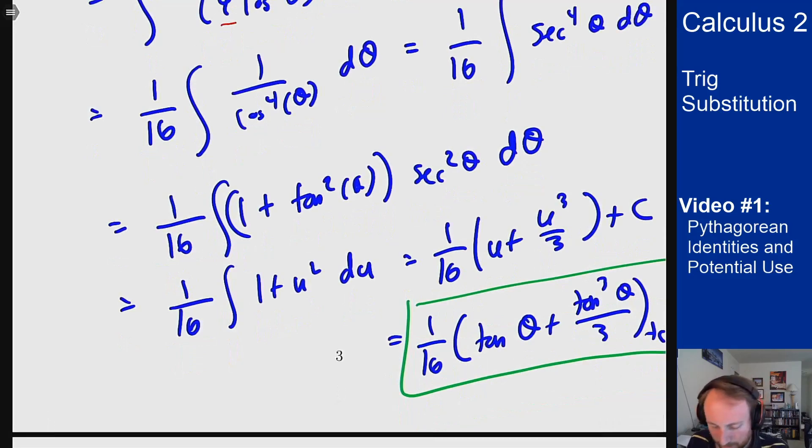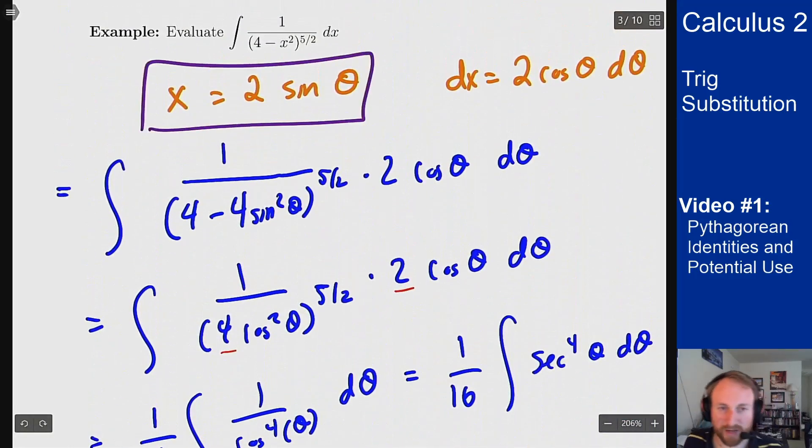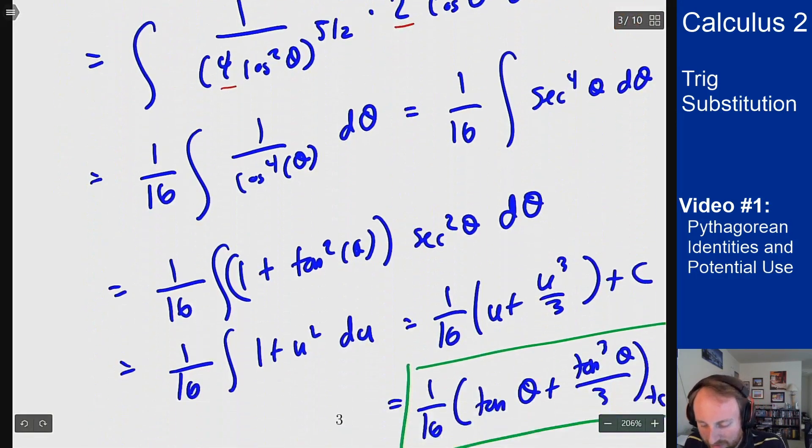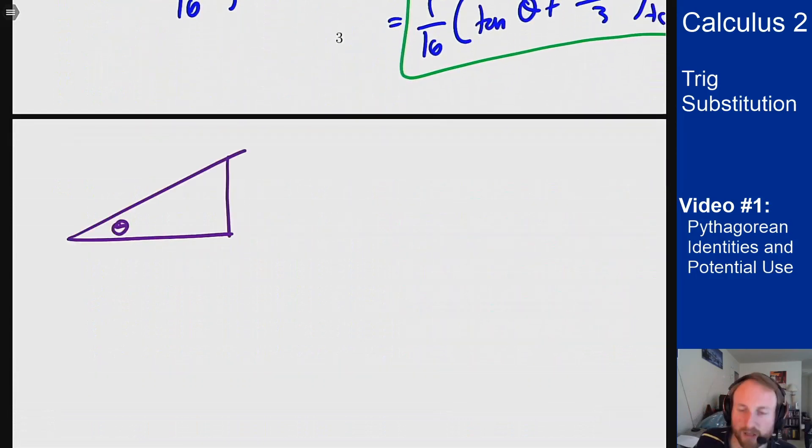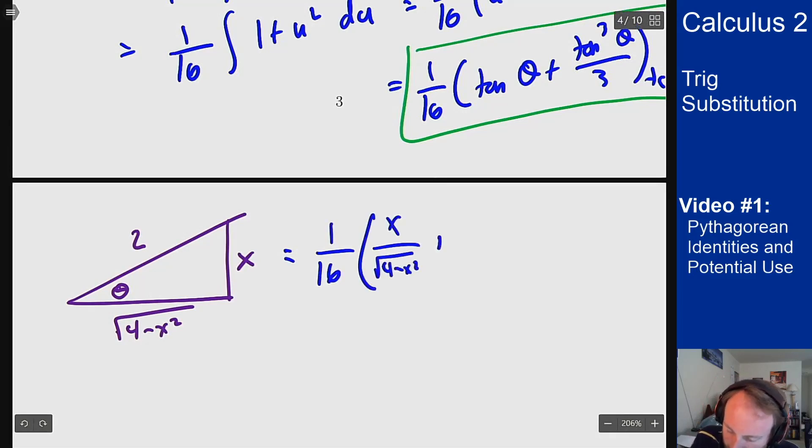How can we do that? We can do that by using a triangle. And what triangle do I want? I want a triangle that fits how x and theta are related, which is by this. So if x is 2 sine theta, then x over 2 is sine of theta, which means I want a triangle where sine of theta is x over 2. So I want a 2 on the hypotenuse, and an x on the opposite side, which means this side should be root 4 minus x squared. And now I know what tangent theta is. It's just x over root 4 minus x squared. So then my answer becomes 1 over 16 times x over root 4 minus x squared plus 1 third times (x over root 4 minus x squared) cubed plus c.